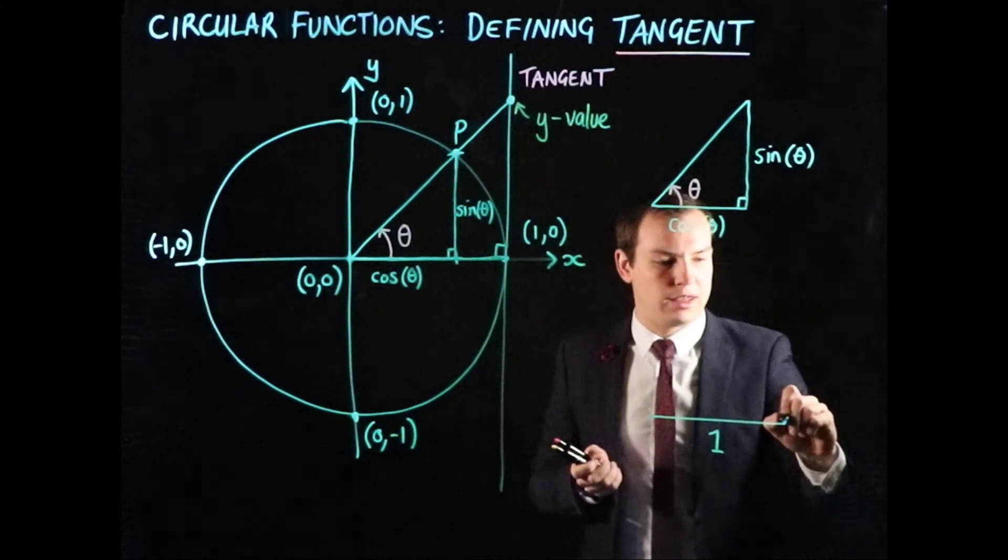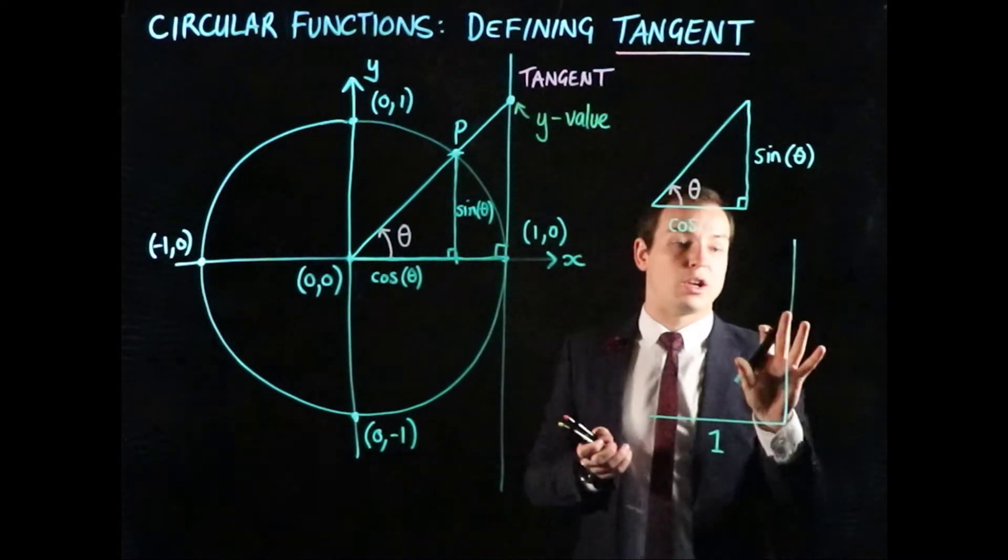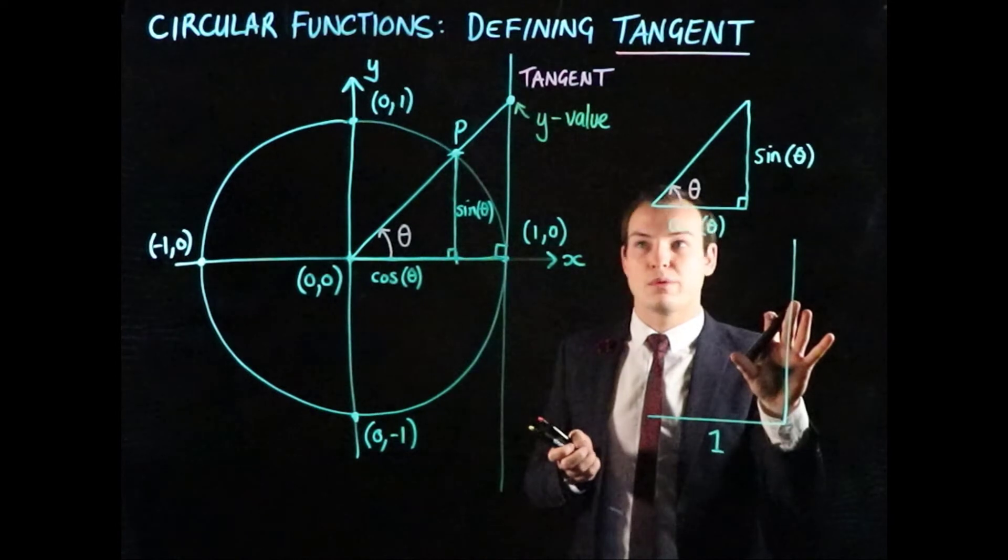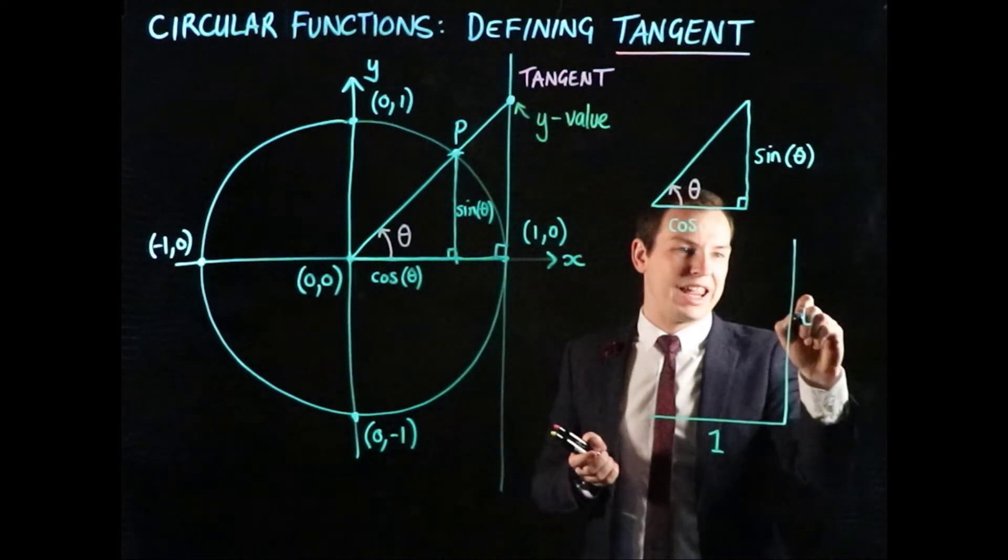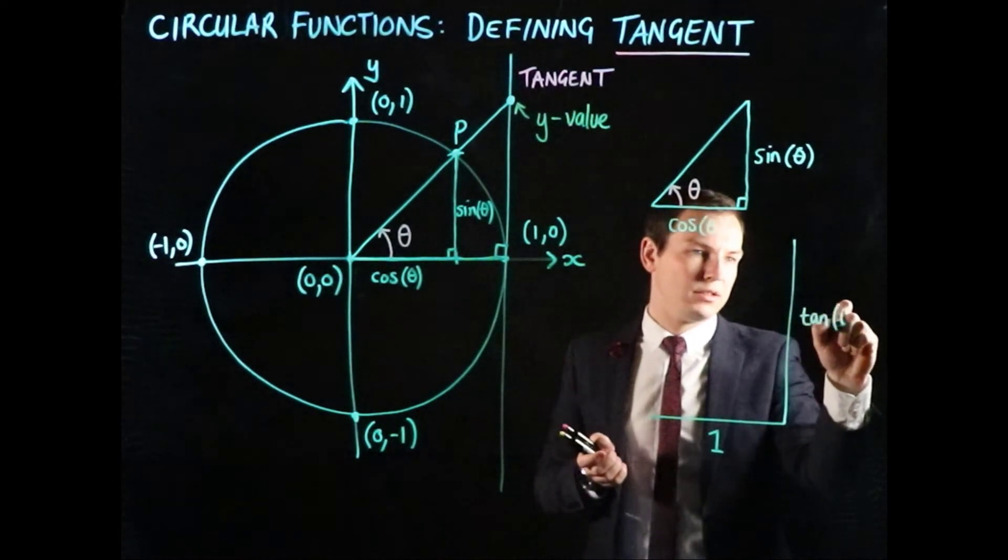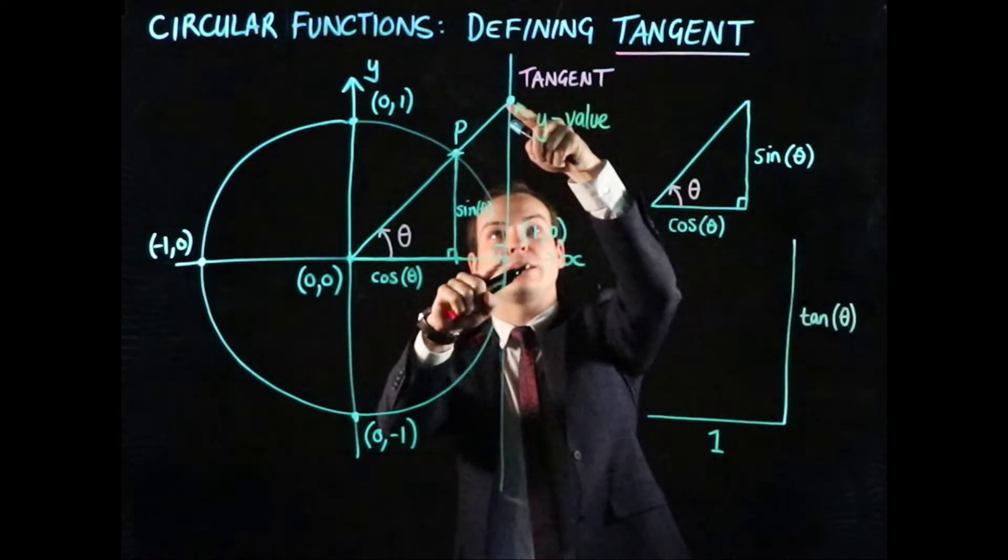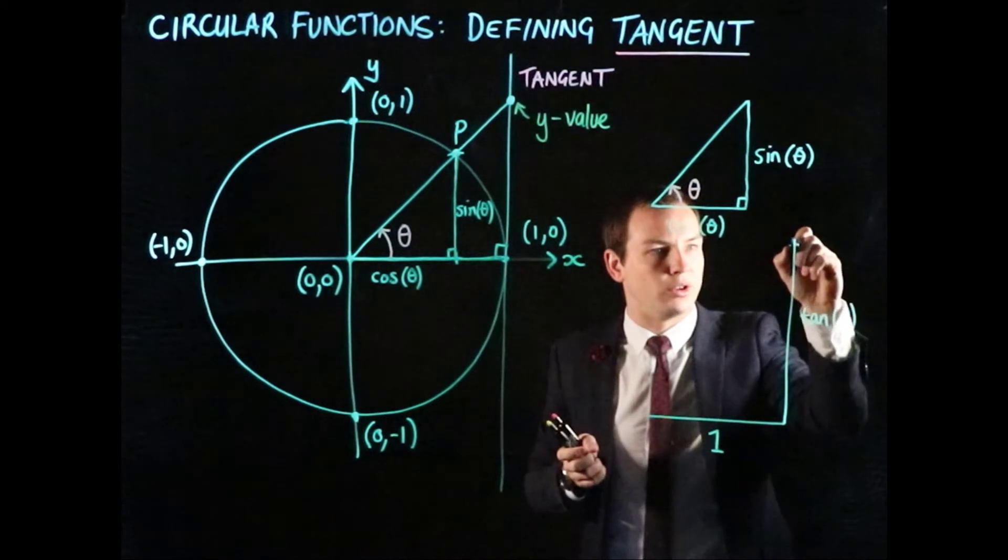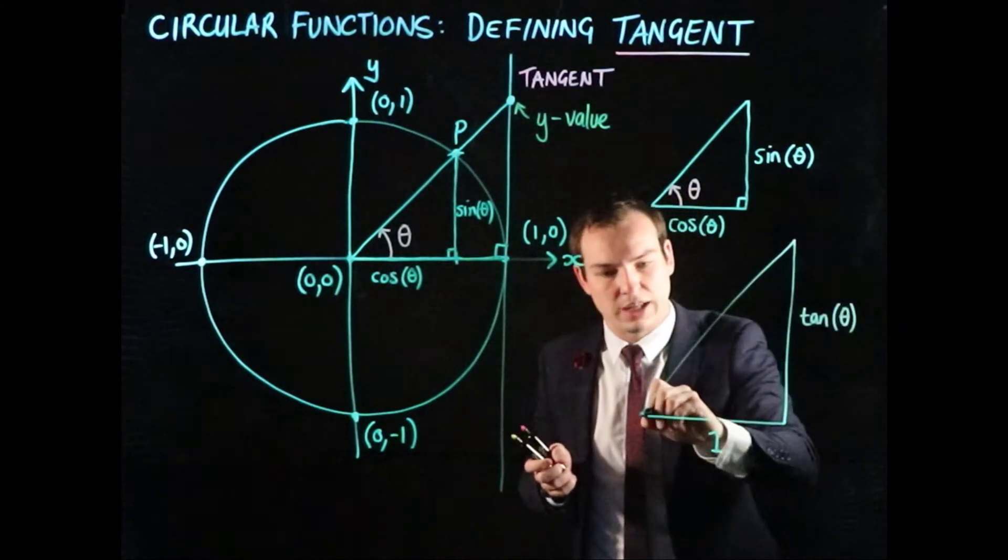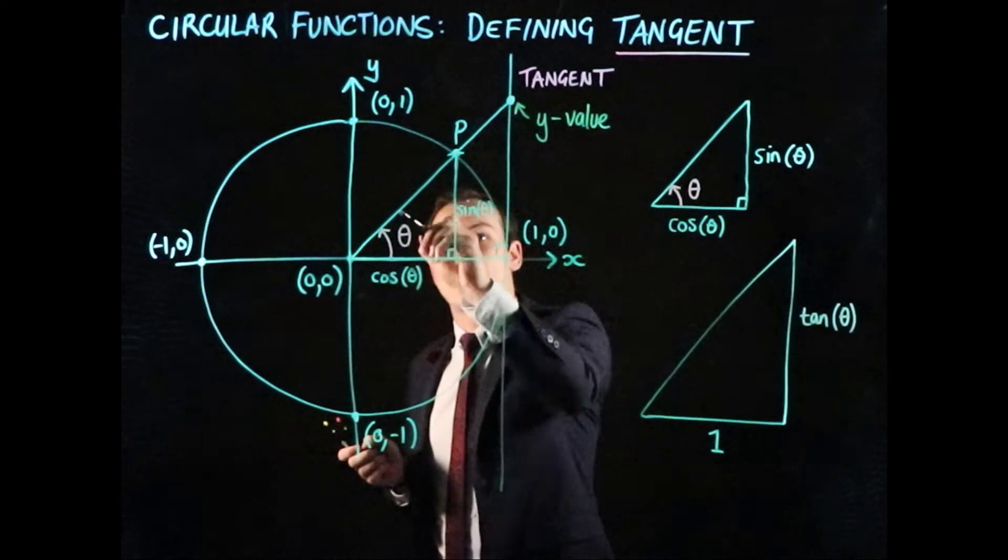This value up here represents the tangent value—tan(θ). This length corresponds to the length we discussed in our unit circle, and this is the line passing through point P.